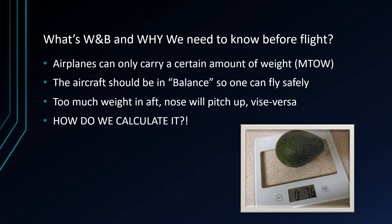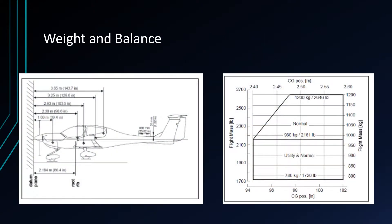So how do we calculate weight and balance for an aircraft? Today we're using a DA-40 as an example, but this applies to pretty much every airplane. On the left, we can see a little diagram of a DA-40. These measurements — called an arm — if you draw a line throughout the airplane, you can see different measurements. For example, the engine and oil have an arm of 39.4 inches. Front seats have an arm of 90.6 inches. These different points represent measurements of where things are on the datum plane.